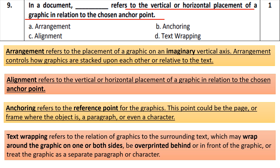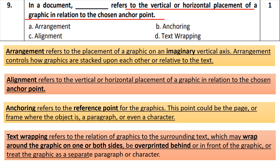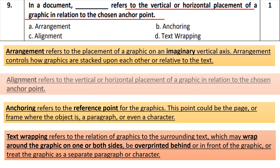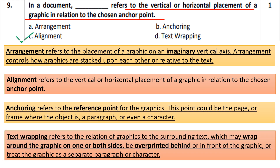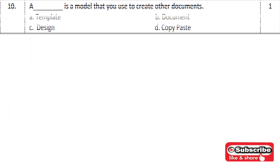Text wrapping is used when we want to print something around our page. It wraps around the graphic on one or both sides, overprints behind or in front of the graphic, or treats the graphic as a separate paragraph or character. These four things — arrangement, alignment, anchoring, and text wrapping — are very important since they appear in the sample paper and questions can come in any format. Take a screenshot of these four things.